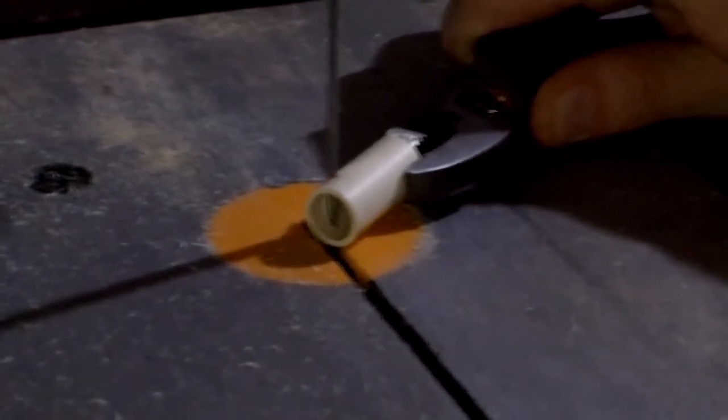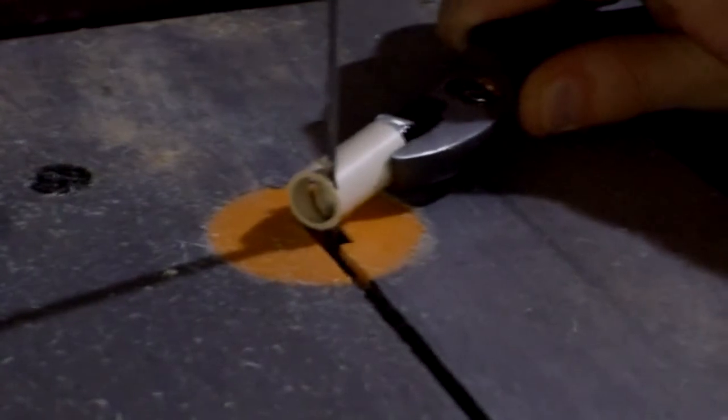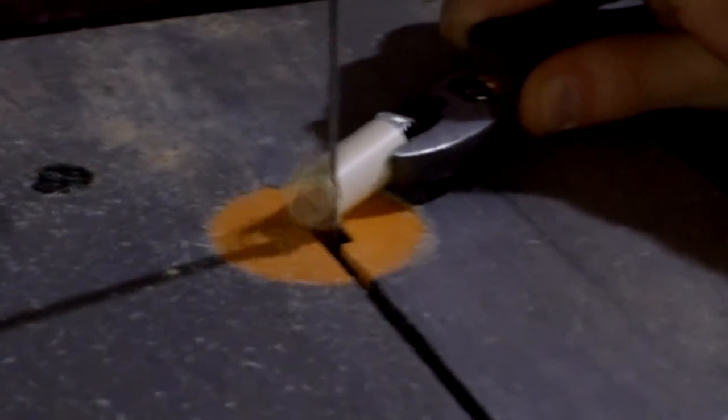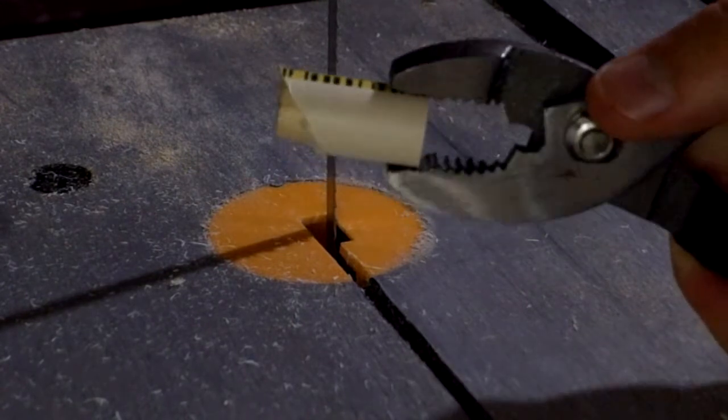Next we want to cut an angle into one end of the small piece of pipe. Try to make it about 45 degrees. This is going to be the mouthpiece. Now we want to do the same thing to the block of wood. I put the wood inside the pipe so I could follow along the line.